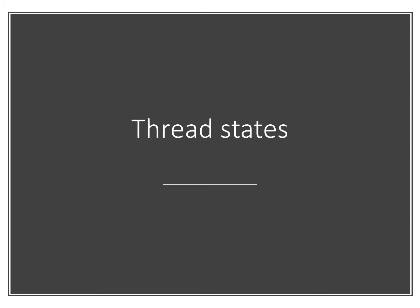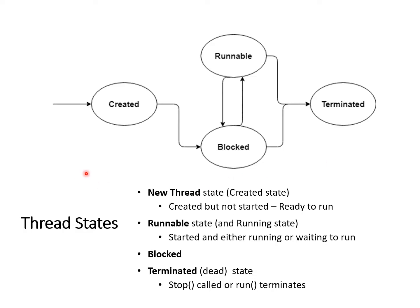Let's look at thread states, which are important to understand because they help you comprehend how the system manages things underneath. States are managed by the JVM and the operating system using a state machine. When we create a thread and call dot start, it enters the runnable state — it's ready to run. When running, it's in the runnable state meaning it's either running or wants to run but hasn't got CPU access yet. The scheduler handles a queue of threads.